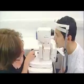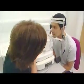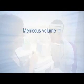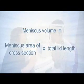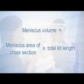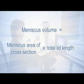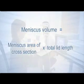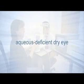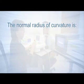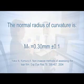Meniscometry is a non-invasive technique for the measurement of the tear meniscus radius of curvature. It can be used to calculate meniscus volume, which is the product of meniscus area of cross-section and total lid length. Meniscus volume is an index of both total tear volume and tear flow. For this reason, it is valuable in the diagnosis of aqueous-deficient dry eye. The normal radius of curvature is 0.3 millimeters.